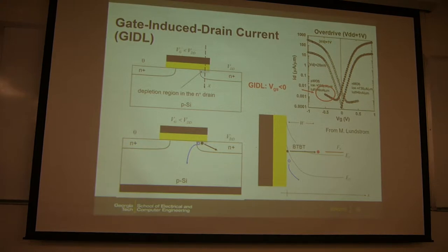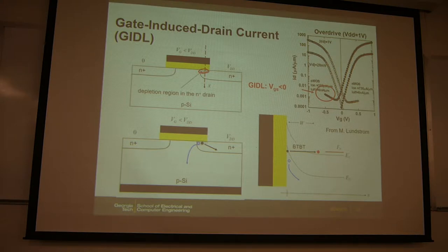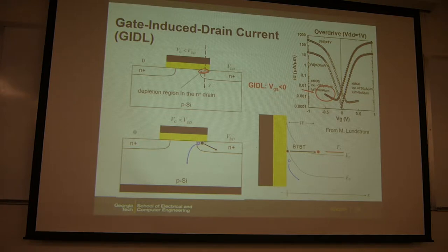Let's understand what GIDL is. Here we have the cross section of the MOSFET, and we highlight this overlap region. Due to the diffusion of the drain dopants, you will have this overlap between the drain and the gate. What happens in this region is that when you have a negative bias — like VGS or VGD smaller than zero —